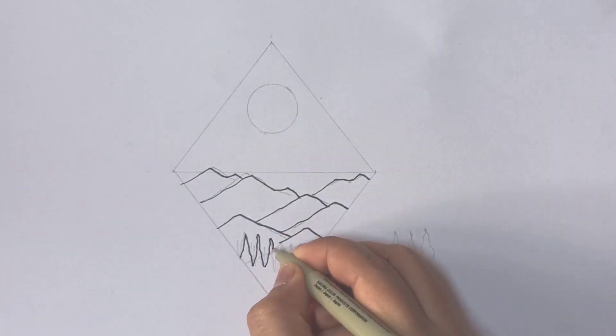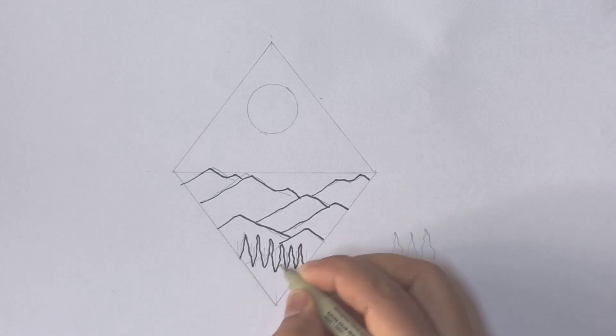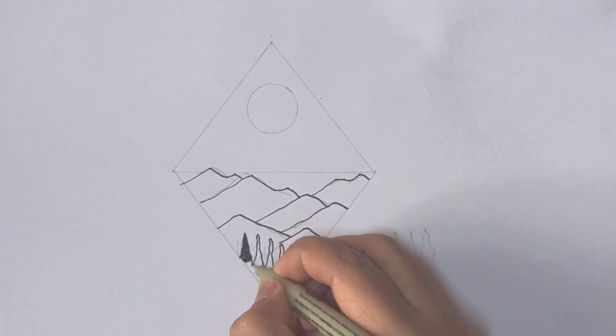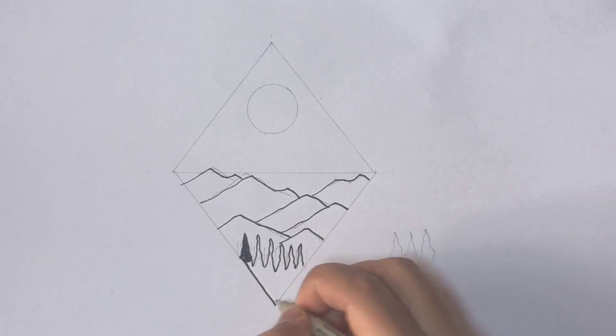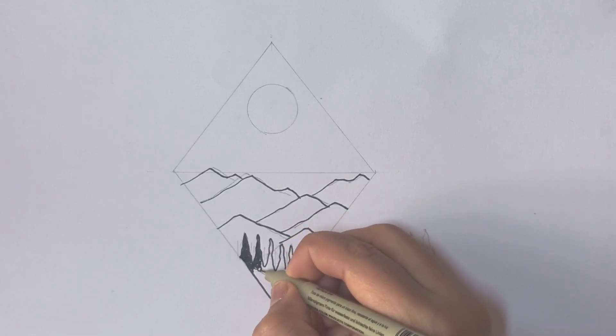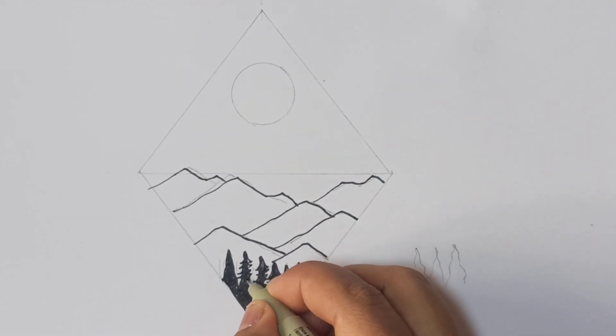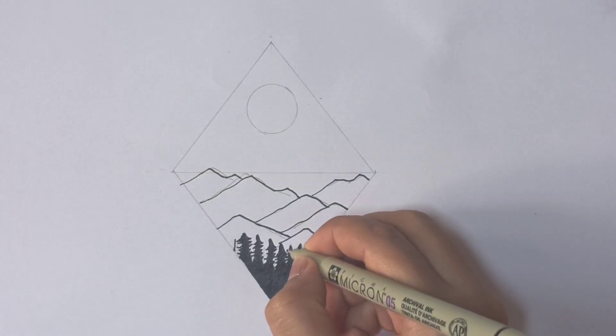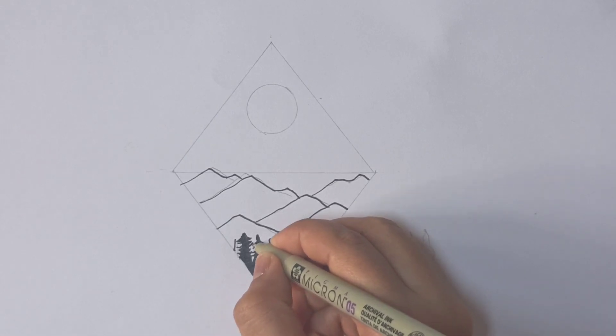Now coming to the trees. We have to fill up the whole portion of this. Just giving zigzag lines to trees for a finished look. Remember the lines we did in between the trees.